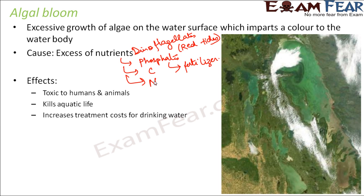Algal bloom also increases treatment costs for drinking water. If the river in your vicinity is the only source of water for the people in that area, you cannot ignore it. You will have to treat that water to remove all undesirable substances before using it for drinking. This treatment incurs high costs, making it economically unwise, though unavoidable. These are the harmful effects of algal bloom.